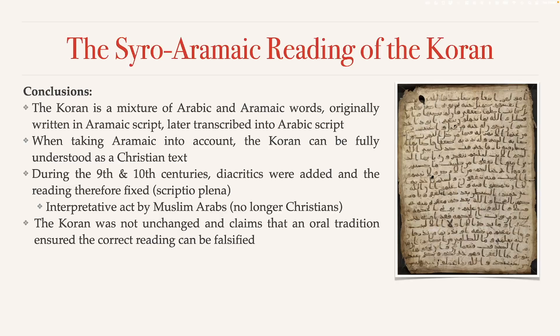What Luxenberg is saying is not that the Quran was originally written in the Aramaic language — the majority is still Arabic. What he's saying is that the first Quranic manuscripts were written using the Aramaic script: Arabic language with some Aramaic words, but in an Aramaic script. The Arabic script is actually quite recent. Before it existed, Arabs wrote Arabic texts using other scripts — Aramaic, Greek, and others — whatever writers were familiar with, since there wasn't a common Arabic script. Luxenberg argues that looking at some scribal errors, they only make sense if the original texts used an Aramaic script.